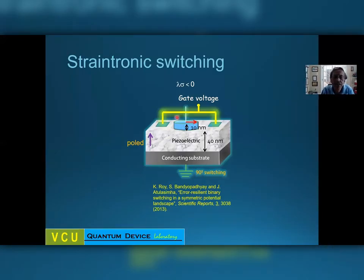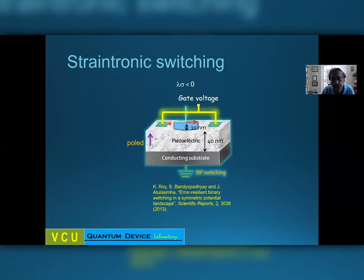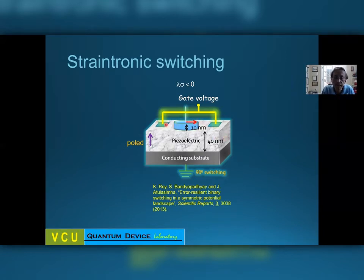You have a nanomagnet shaped like an elliptical disk, and its magnetization has two stable directions along the major axis of the ellipse, either pointing to the right or to the left, and these two encode the binary bits 0 and 1. So when you switch the magnet, you will flip the magnetization from right to left or left to right.